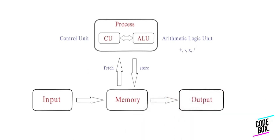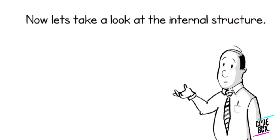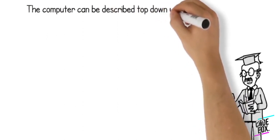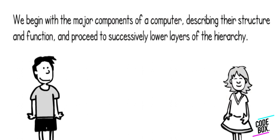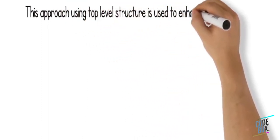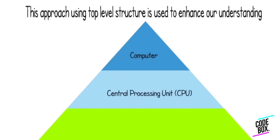This is the basic structure of the von Neumann architecture. This is basically the basic structure of our computer, including the central processing unit and control unit. This is the top level structure.